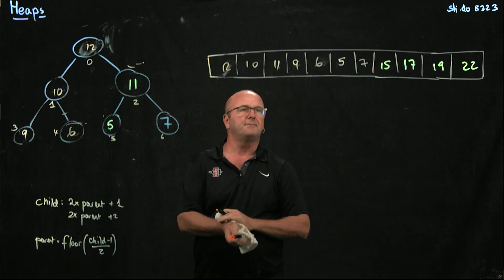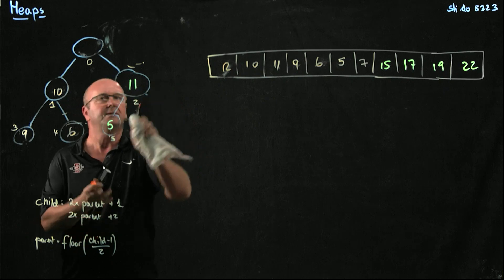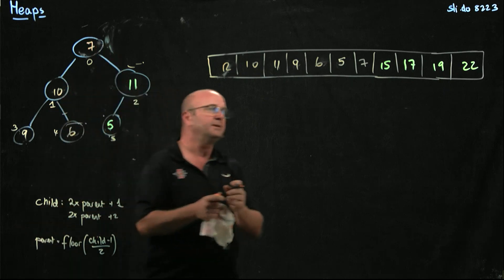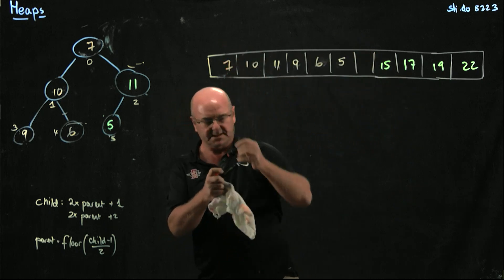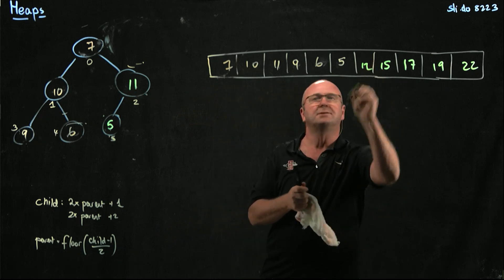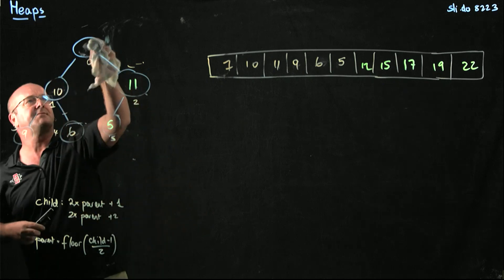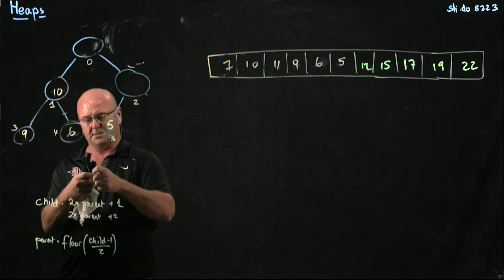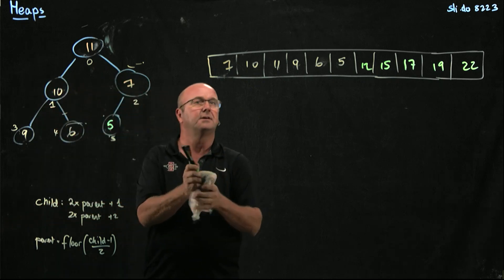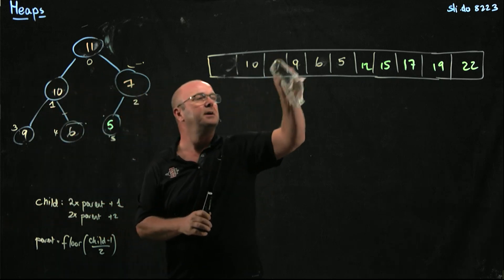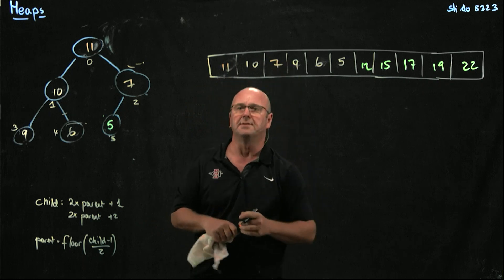Now we take the 12. The way that we take away the 12 is that we swap it with the 7. This becomes 7, and this becomes 12. We've got to correct our heap, so we're just going to swap the 7 and the 11. Now our heap is 11 and 7.